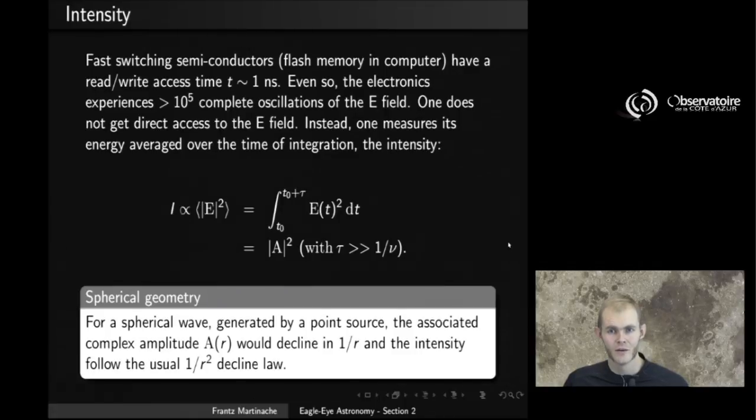And instead, what we measure in practice is the time-averaged energy that is associated to that electric field, something called the intensity. And just by looking at, again, Maxwell's equations, you can see that this time-average energy is associated to the square amplitude, the square modulus of the electric field, which happens to be, using our notations of earlier, the square modulus of the complex amplitude itself.